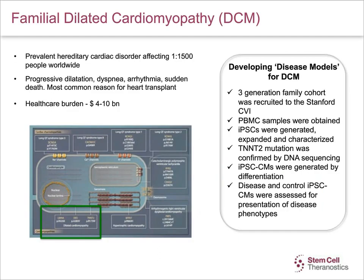This slide describes dilated cardiomyopathy, a hereditary cardiac disorder that affects 1 in 1,500 people worldwide and is characterized by progressive dilation, dyspnea, arrhythmia, and sudden death. This disorder is the most common reason for heart transplant. A three-generation family cohort was recruited to the Stanford Cardiovascular Institute. PBMC samples were obtained, iPSCs were generated, expanded, and characterized. The TNNT2 mutation was confirmed by DNA sequencing, cardiomyocytes were generated, and disease and control cardiomyocytes were evaluated for the presence of disease phenotype.